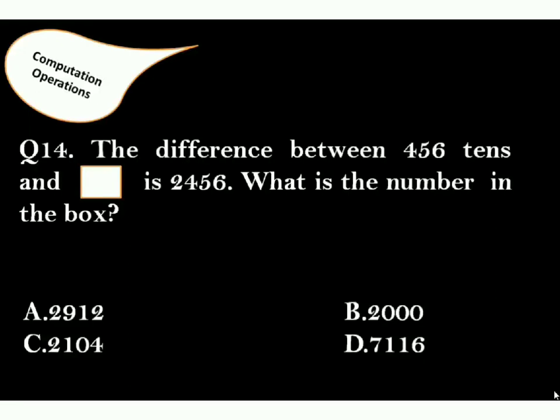The difference between 4,560 tens and box is 2,456. What is the number in the box? Correct answer is option C. Here, 4,560 tens means 45,600. 45,600 minus 24,560 equals 21,040.